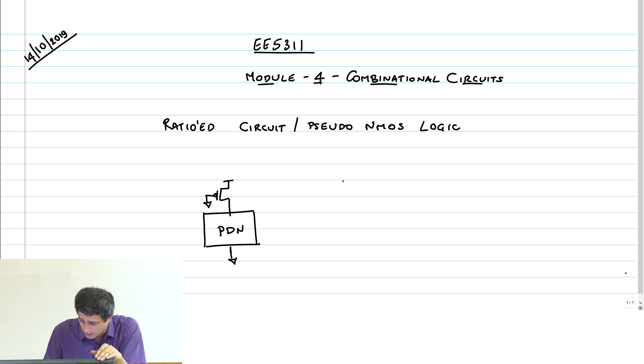Now if you take a pseudo NMOS inverter, then the issue is: if you take the case when A is 0, there is no problem because the output will be VDD. The NMOS transistor is going to be off, only the PMOS will be on. There is no current from VDD to ground other than leakage current, and hence there is no issue when the output is going to a logic high.